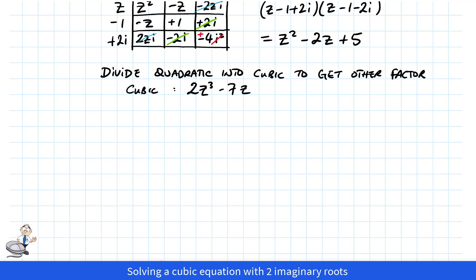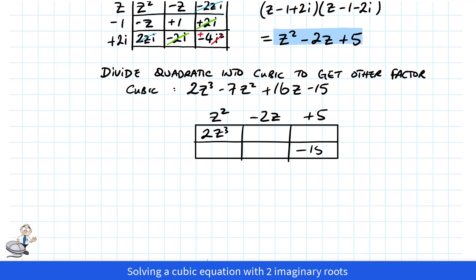So now that we have a quadratic factor, we could divide this quadratic into the cubic expression. This is pretty straightforward to do. 2z³ divided by z² is 2z, and -15 divided by 5 equals -3. So we see it works. The other factor is 2z - 3.